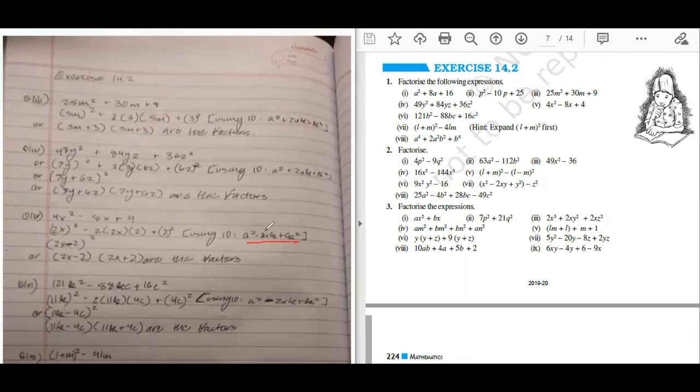Write full identity. a square minus 2ab plus b square equals to a minus b whole square.